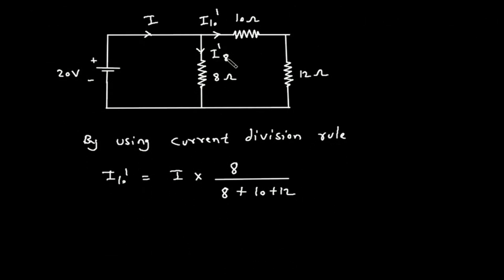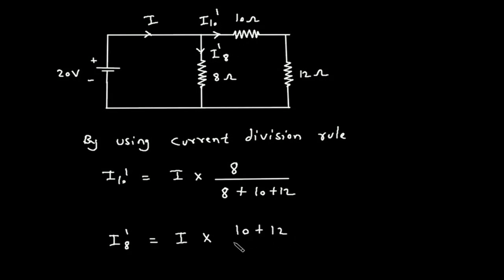Similarly, I8 prime is equal to total current I multiplied by the parallel branch resistance, which is (10 + 12). So, I8 prime = I × (10 + 12) divided by (10 + 12 + 8).